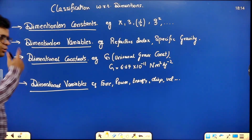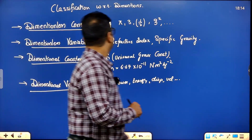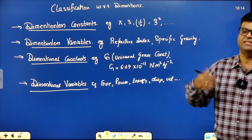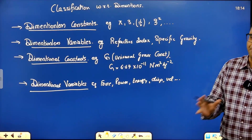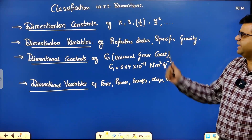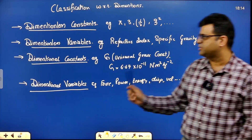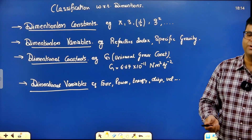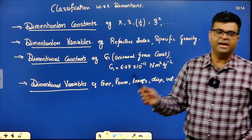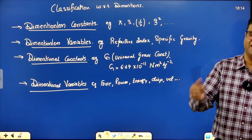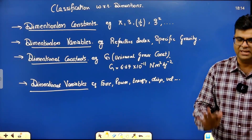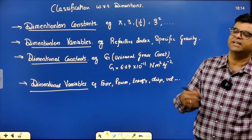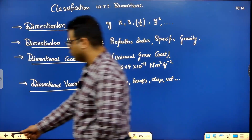So we classify into four categories: dimensionless constants (numbers like 1, 2, 3 — no unit), dimensionless variables (like refractive index), dimensional constants (like G, with both a dimension and a fixed value), and dimensional variables (all remaining physical quantities with dimensions and variable values).